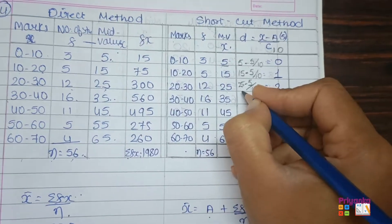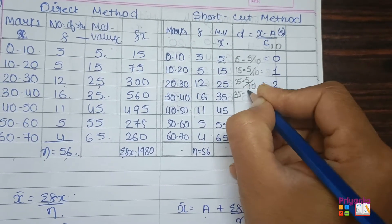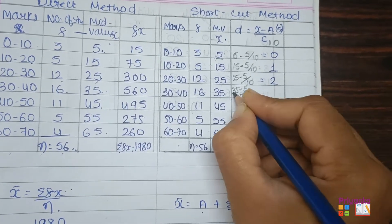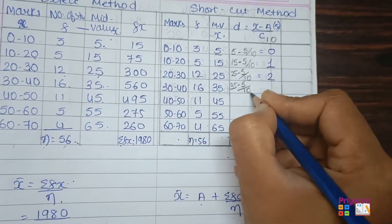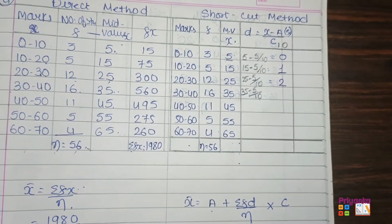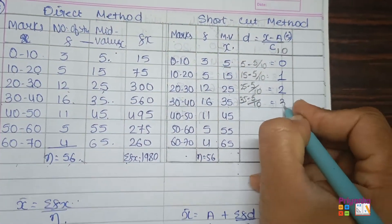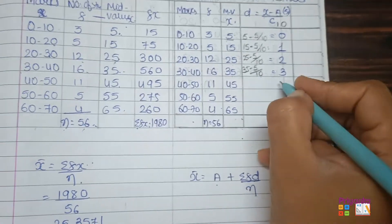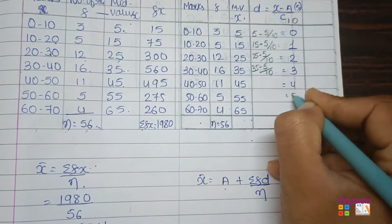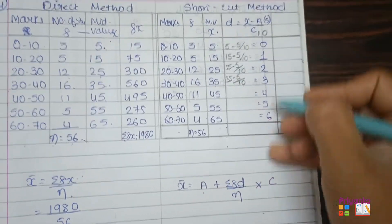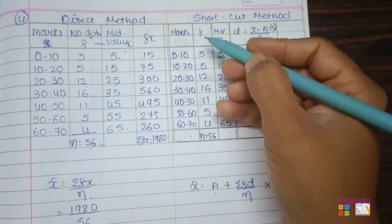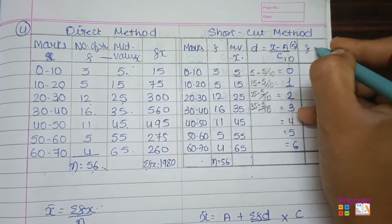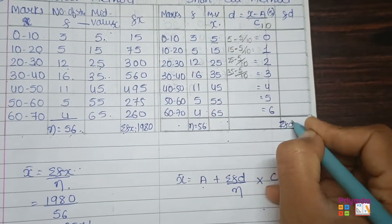You only need the total of the frequency column and the total of the fd column to find σfd. The formula requires σfd, so for the fd column, multiply frequency and d: 3×0=0, 5×1=5, 12×2=24, 16×3=48, 11×4=44, 5×5=25, 4×6=24. Don't take the total of d.